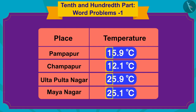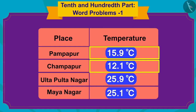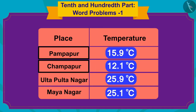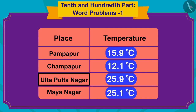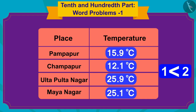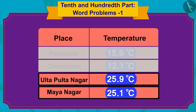We shall write down the tens place of these temperatures and compare them. The temperatures of Champapur and Pumpapur have one in the tens place, and those for Ulta Pulta Nagar and Maya Nagar have two in the tens place. Since one is lesser than two, we will now only compare the numbers in the units places of Ulta Pulta Nagar and Maya Nagar.